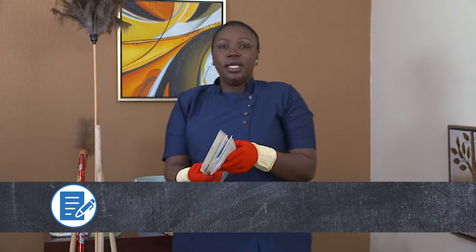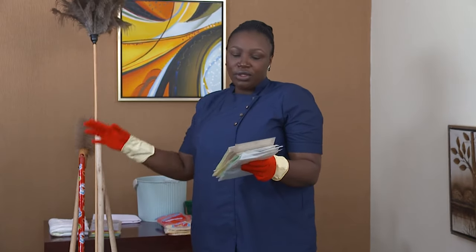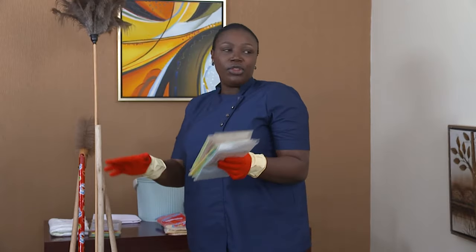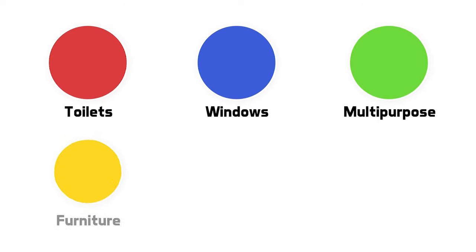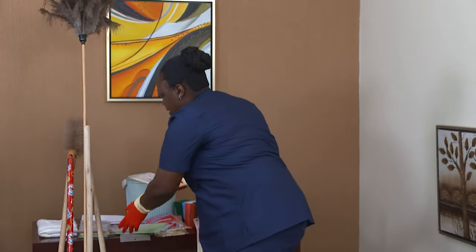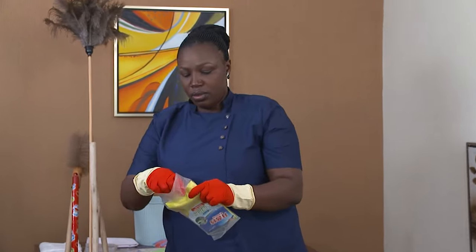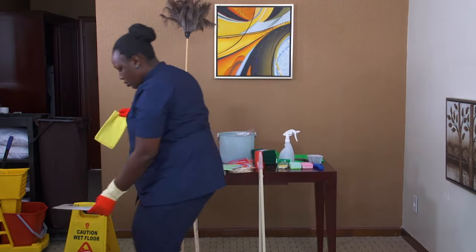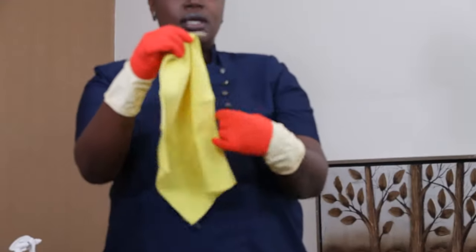This is cleaning cloth. Cleaning cloths have to be in different colors for different purposes. When you are cleaning the table, you have to differentiate the cloth you use on a table from the one you use on the wall, in the toilet, or on glasses. The red one you use mostly when cleaning the toilet. The blue one you use when cleaning windows. The green one is for multi-purpose. And the yellow one is for furniture.